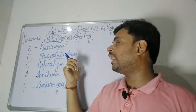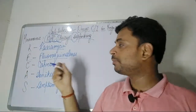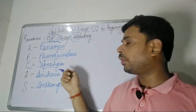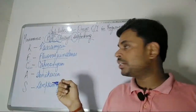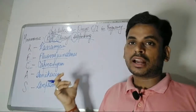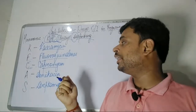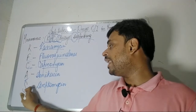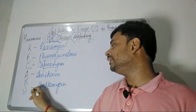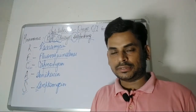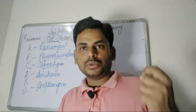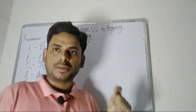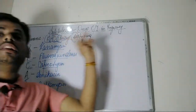Continuing with the mnemonic: C stands for Capreomycin, which is also an anti-tubercular drug contraindicated in pregnancy. A stands for Amikacin, and S from 'Surprising' stands for Streptomycin — all contraindicated in pregnancy.